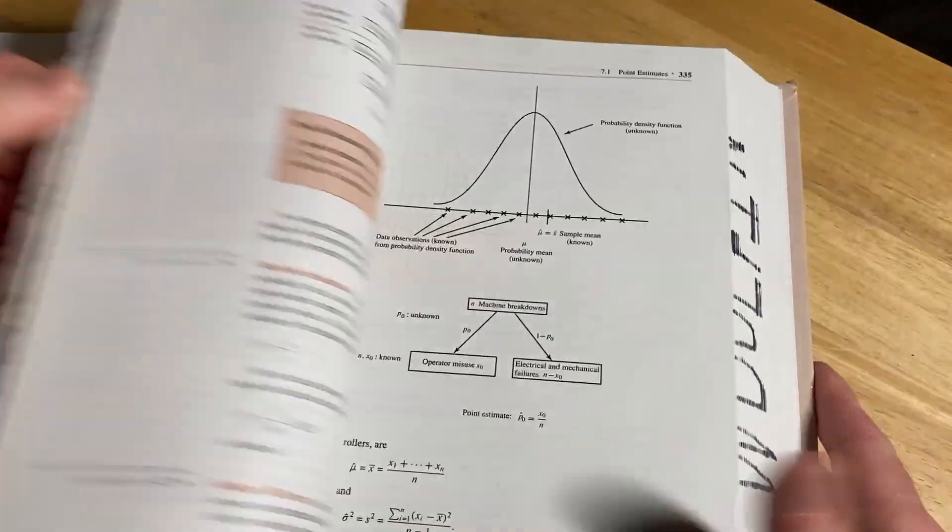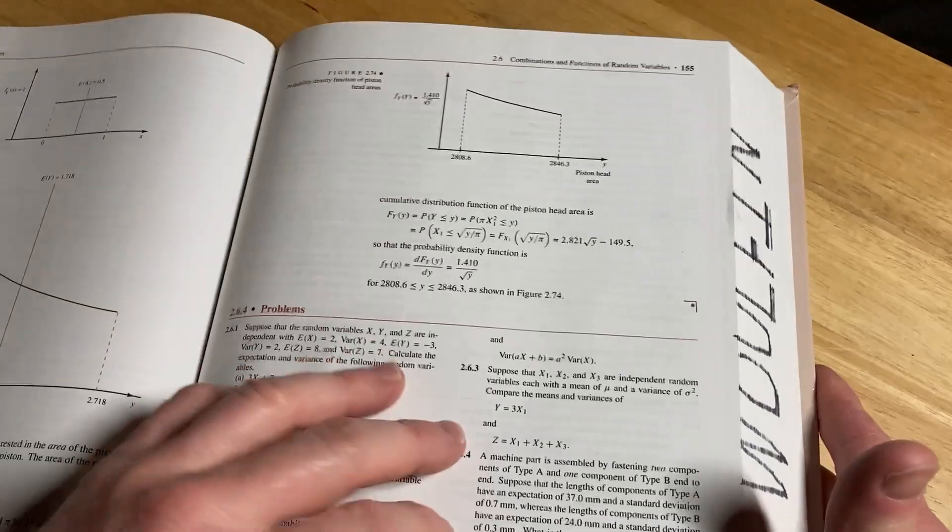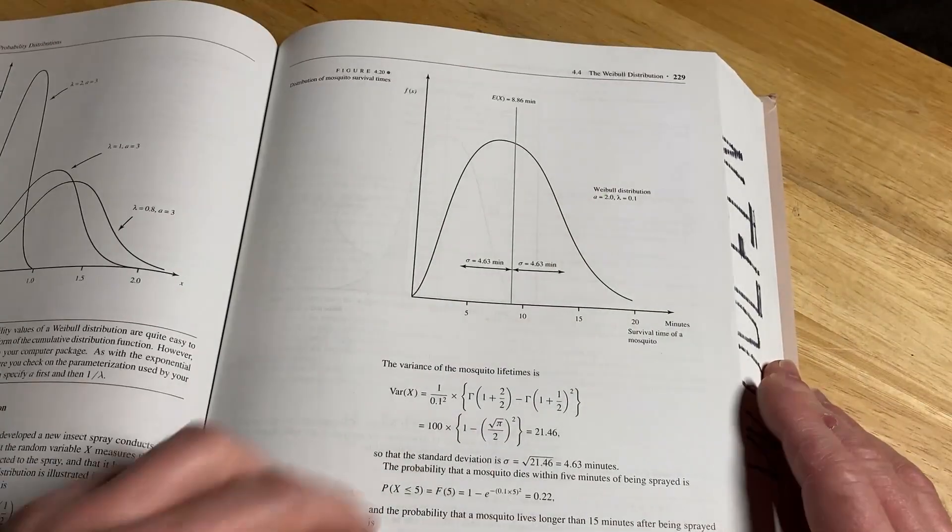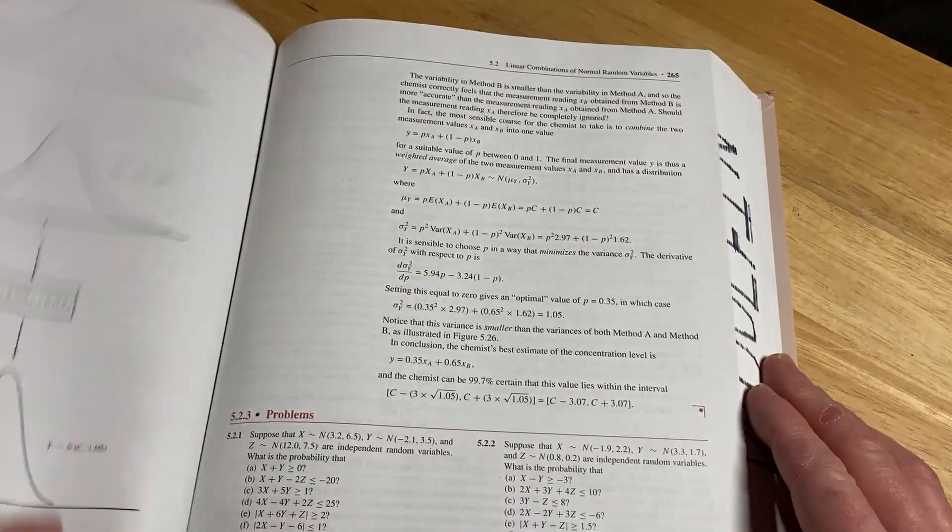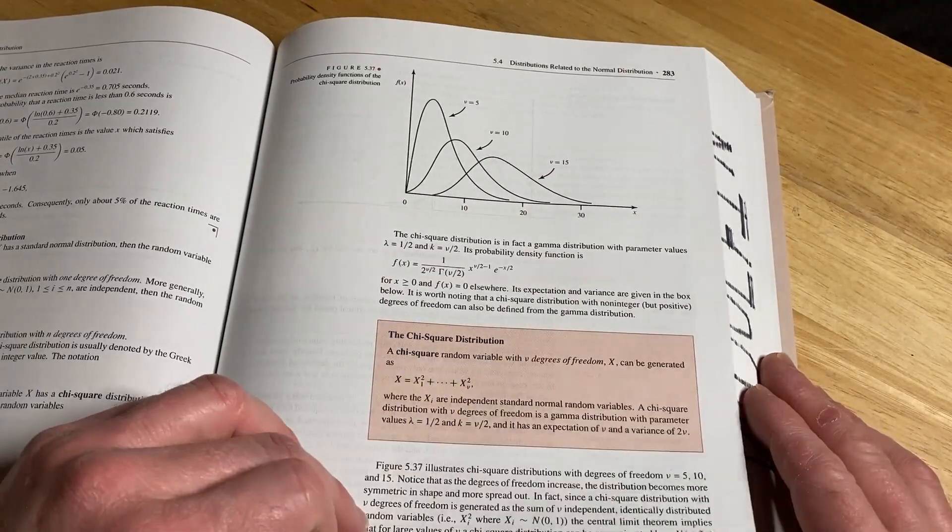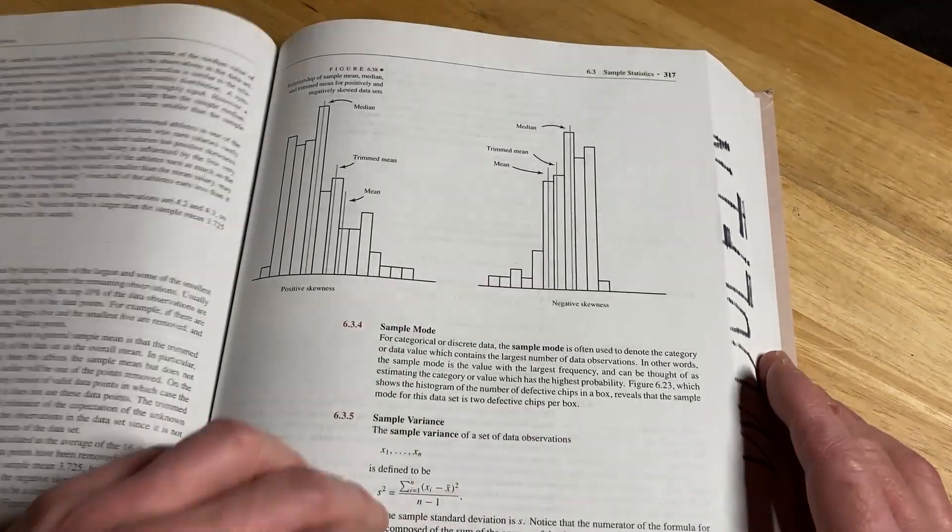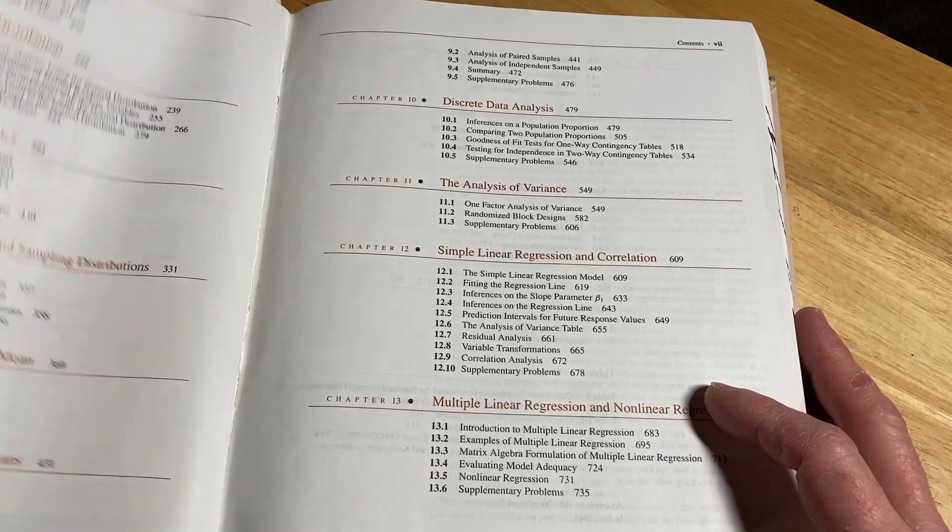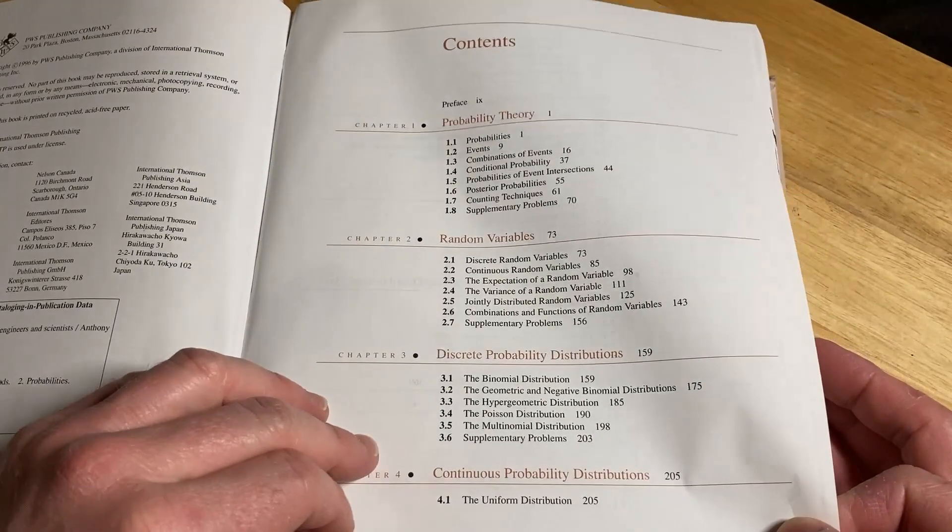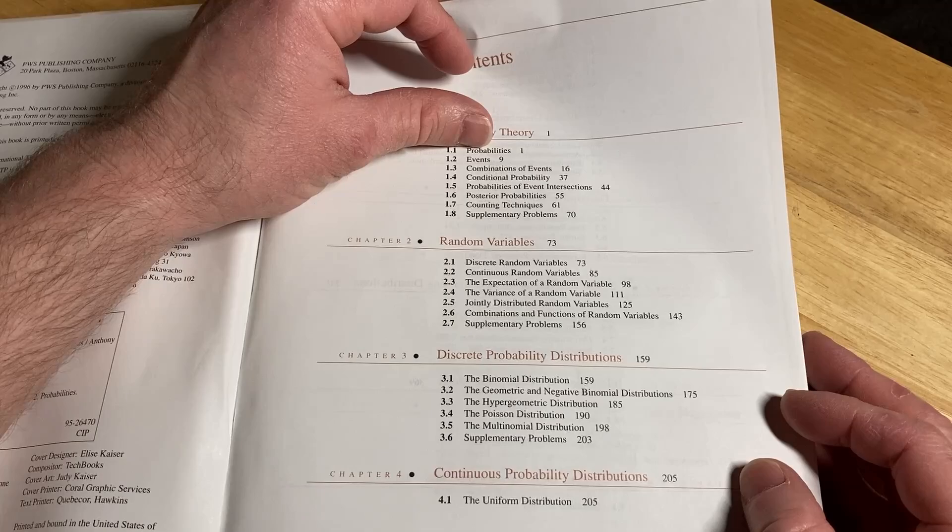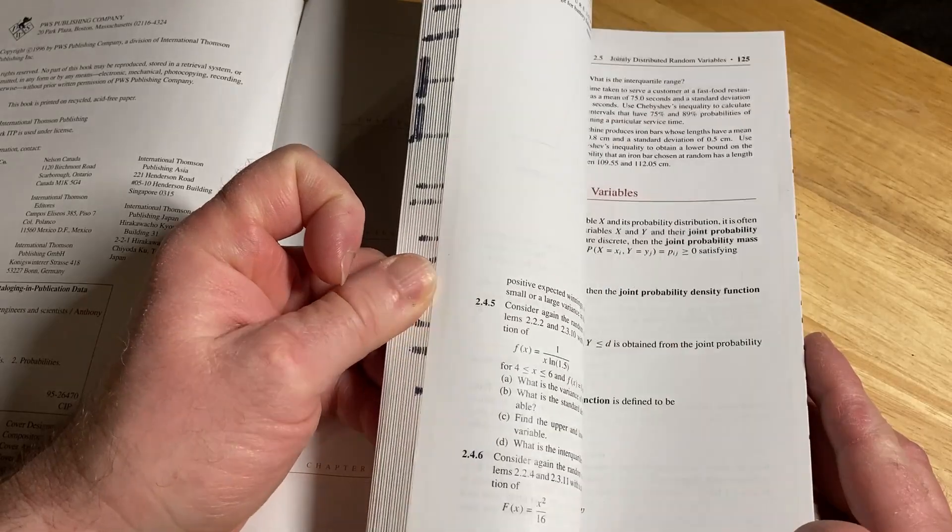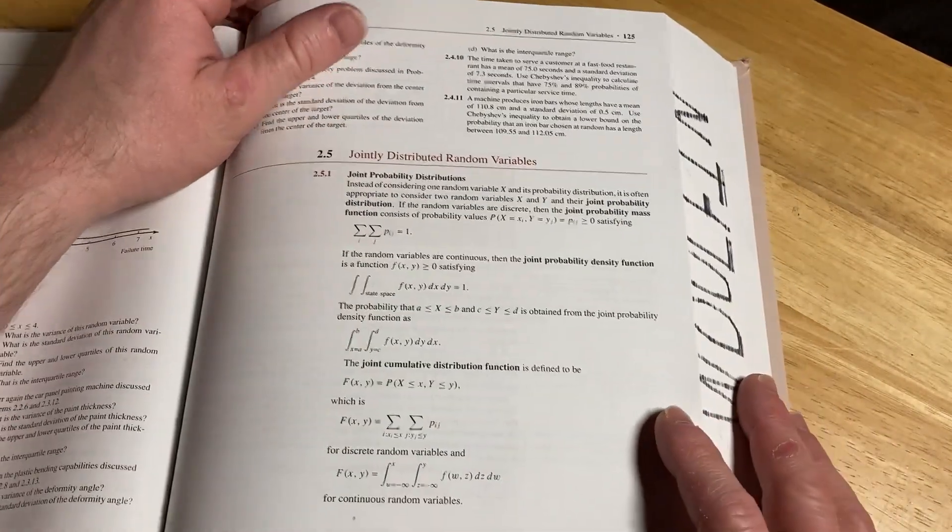You can use this to learn a lot of statistics. It also has other things - it has some probability. Here's the uniform distribution, the Weibull. Let's go to distributions related to the normal distribution. We've got the F distribution. Let's take a look at some of the stuff on random variables, page 125, jointly distributed random variables.